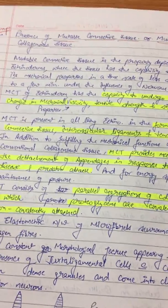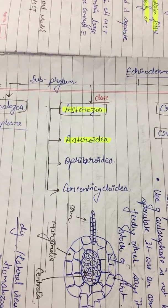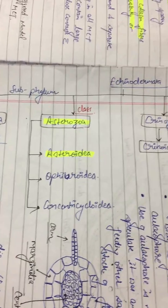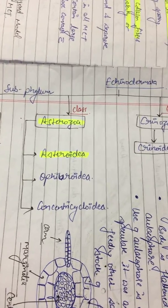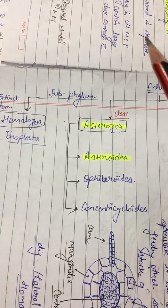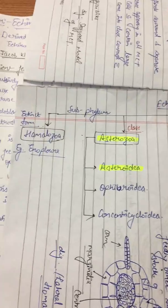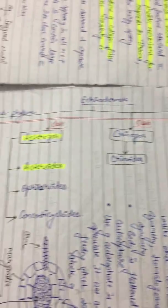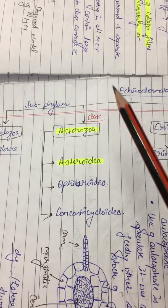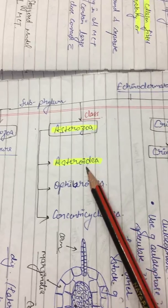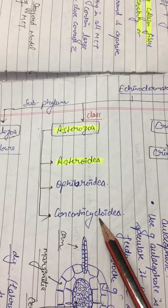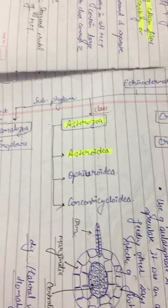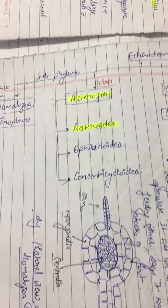Regarding the classification of Echinodermata, no direct question has come in the last ten years. However, one very important genus is Asterias, the starfish, which comes under the subphylum Asterozoa. The subphyla are: Homalozoa, Asterozoa, Crinozoa, and Echinozoa. The most important is Asterozoa, which contains three families: Asteroidea, Ophiuroidea, and Concentricycloidea.